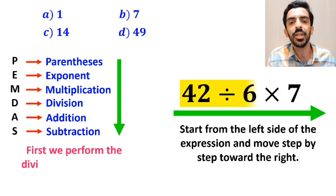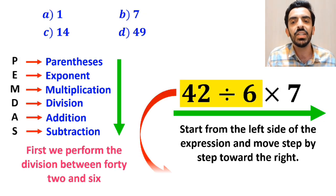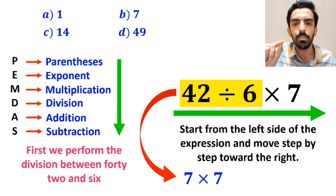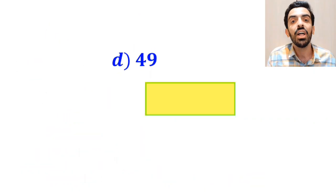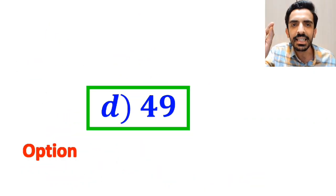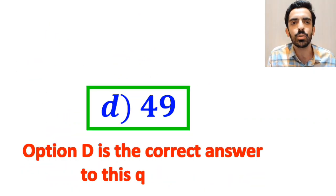So, first we perform the division between 42 and 6, which simplifies this expression to 7 multiplied by 7. Finally, the value of this expression will be 49. Therefore, option D is the correct answer to this question.